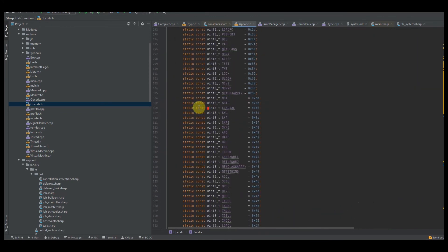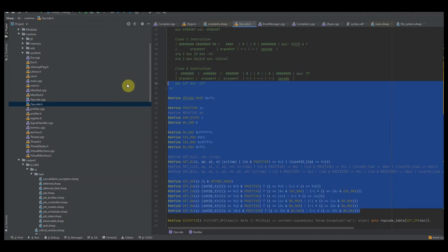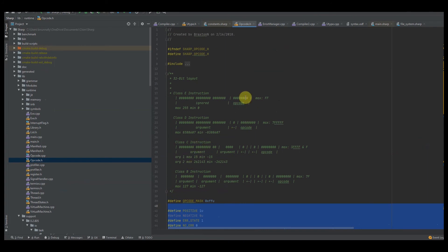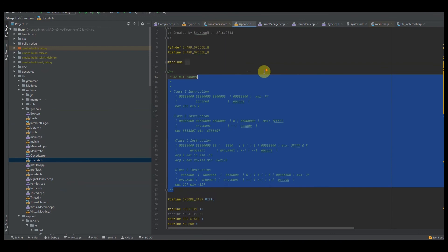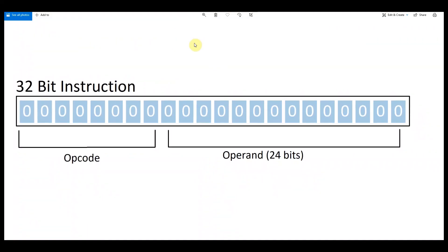Before we get into any of this, we need to understand what an instruction is. We'll start with the instruction code, and as you can see I have several different types of instructions in a 32-bit layout. I've made a few pictures for you to visualize how we're looking at our instructions — keep in mind they're just for illustration. Since we want our programming language to run on both 32-bit and 64-bit operating systems, every single opcode has to be 32-bit instructions by default.